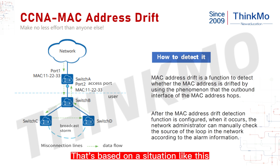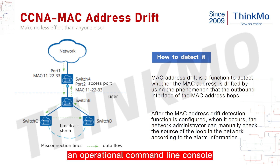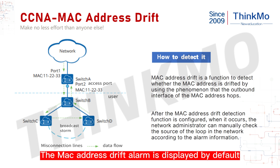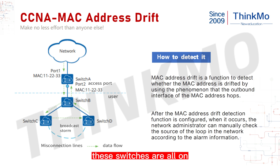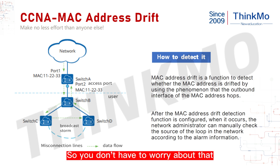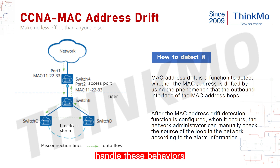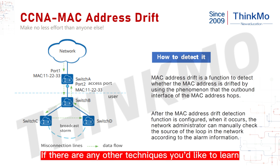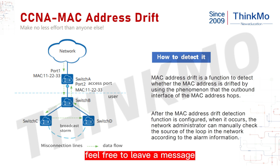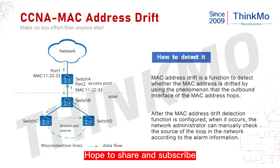Based on this situation, the MAC address drift alarm will be displayed by default on our console — the operational command line console. These switches all have MAC address drift detection enabled by default, so you don't have to worry about that. In the next episode, we'll continue with more effective procedures for handling MAC address drift — detecting MAC address drift in the network and whether it will automatically handle these behaviors. That's all for today. If there are any other techniques you'd like to learn, feel free to leave a message or send me a message. Hope you'll share, subscribe, and like. Thank you, see you next time.